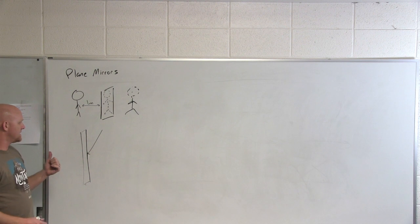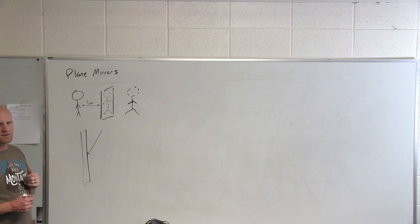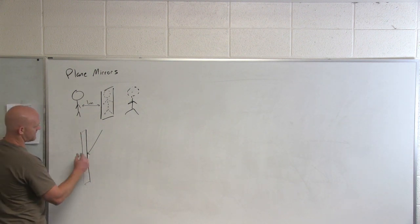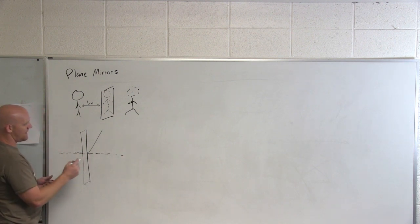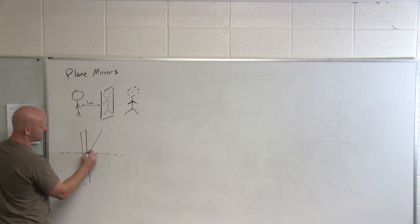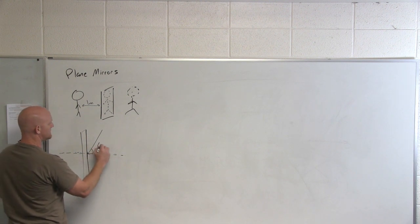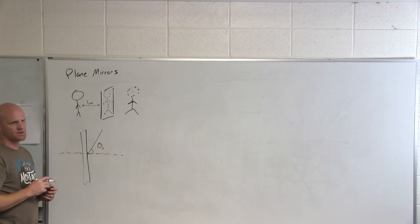Second part of plane mirrors is if you shine light on it with an angle relative to the mirror. We define the angles here. We always draw the normal line here and the angle between where the light comes in and the normal, we call the incident angle, which I'll just call theta one in this case.